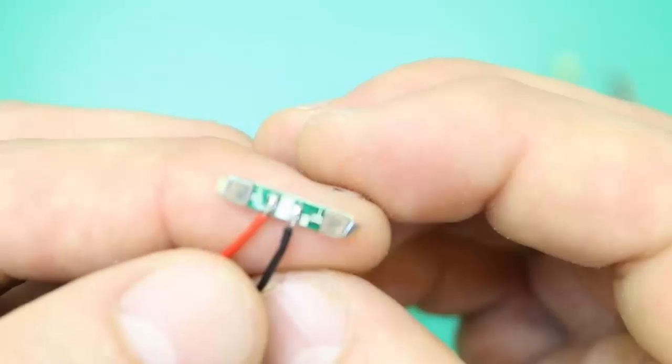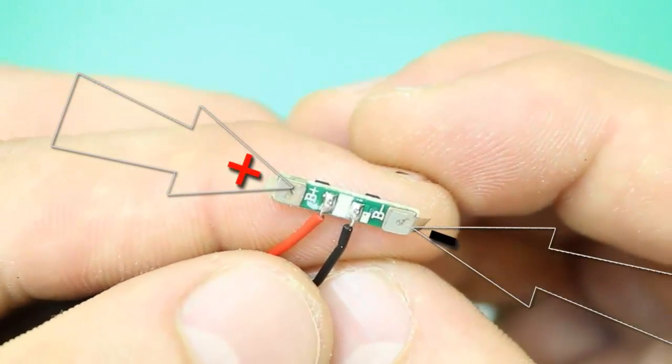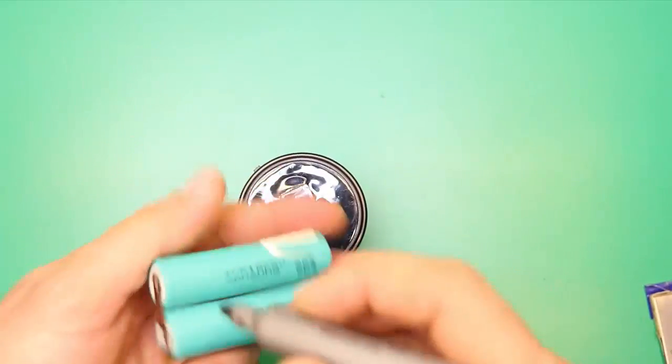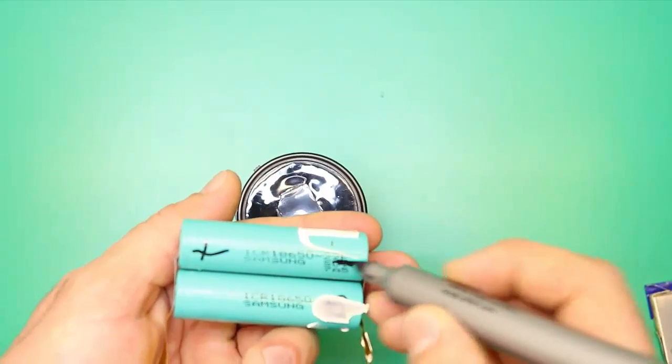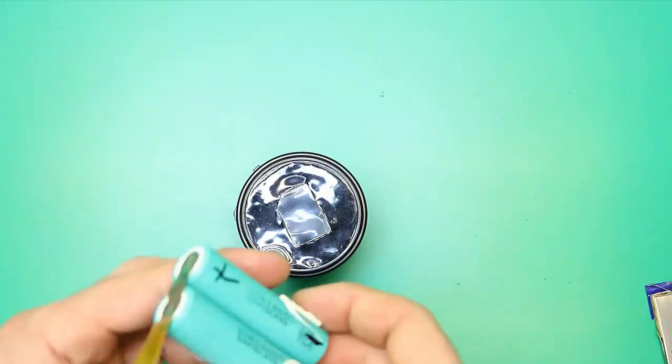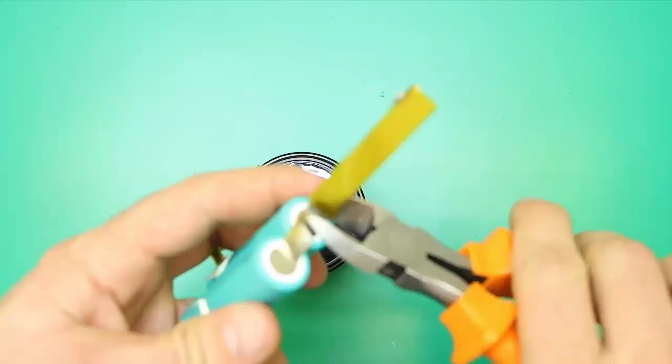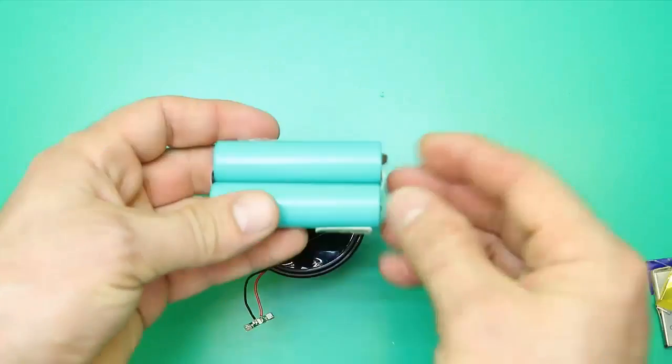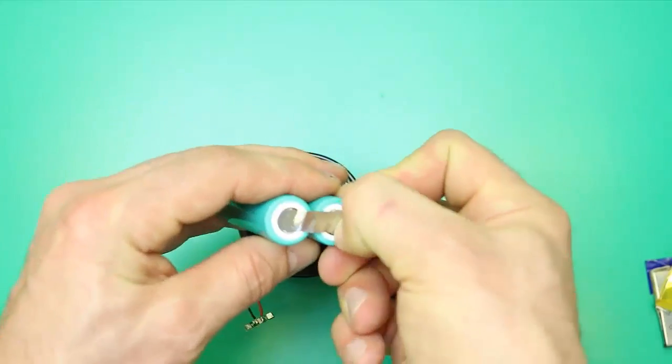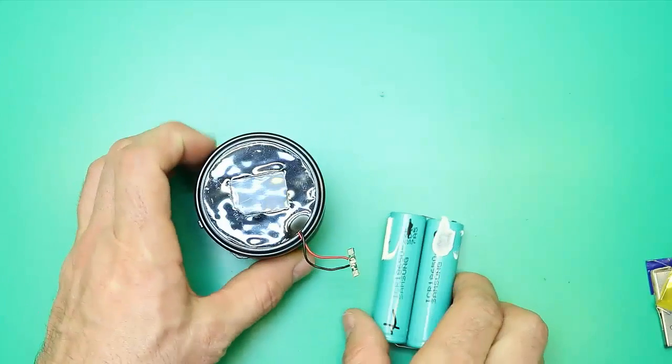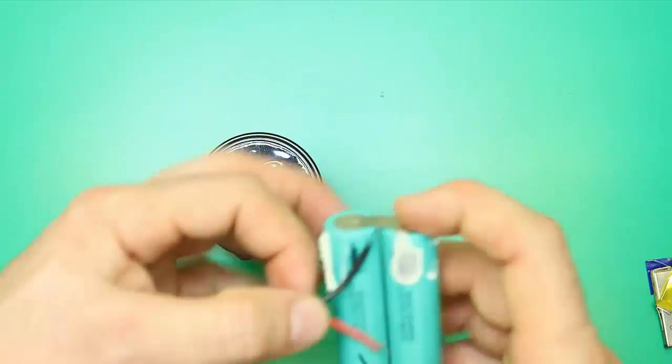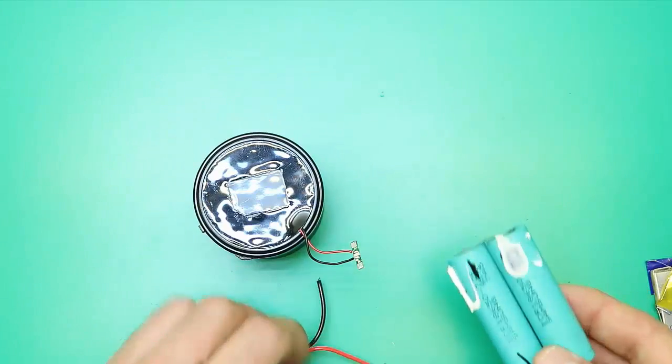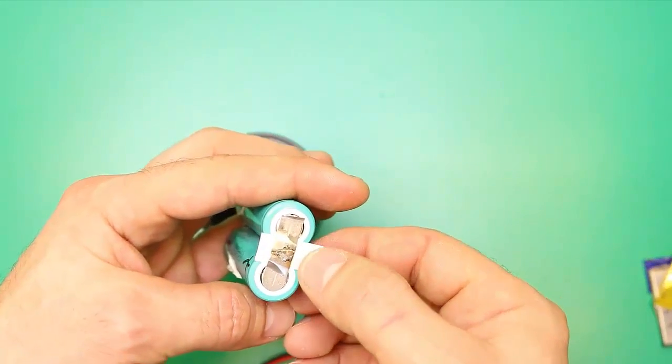The negative and positive terminals are marked on the charging module where the battery wires will be connected. Here we will put a little insulation for the thermal protection of the batteries.